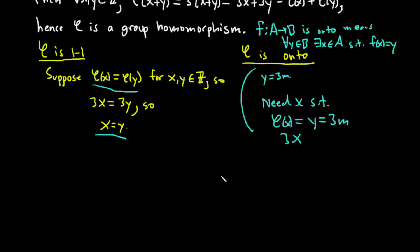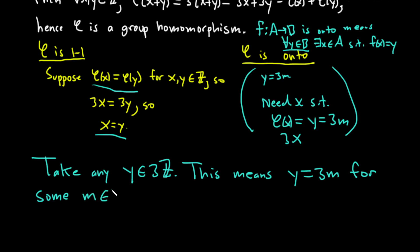Let's prove that phi is onto. To show it's onto, we start with a y in b. Our b is 3Z. So take any y in 3Z. What does that mean? This means y is equal to 3m for some m in Z. It's just some multiple.